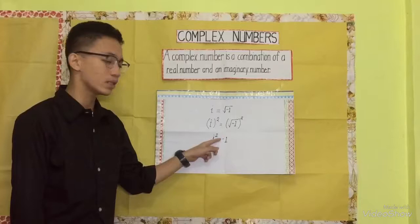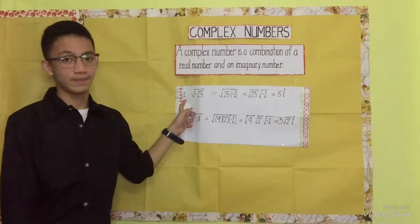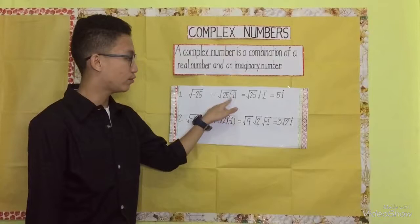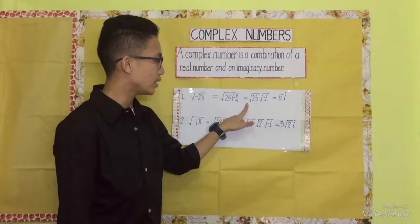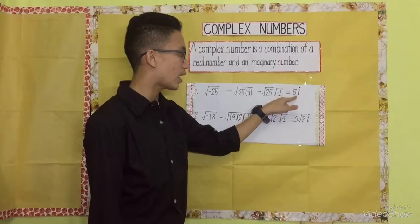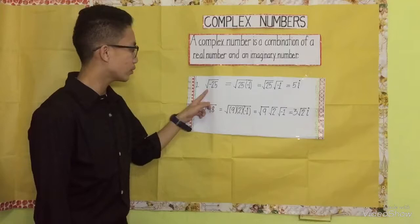So, let us start with an example. Number one, let's simplify. The square root of negative 25 is equal to the square root of the factors of negative 25, which are 25 times negative 1. Applying the properties of radicals in multiplication, the square root of 25 times the square root of negative 1 — the square root of 25 is equal to 5 and the square root of negative 1 is equal to i. Therefore, the answer to the square root of negative 25 is 5i.